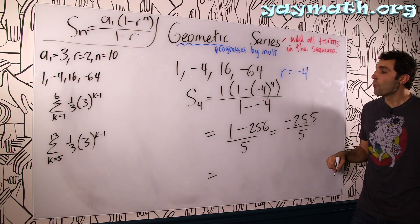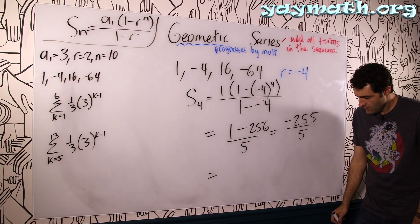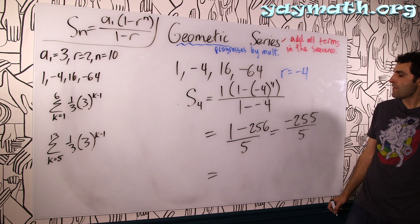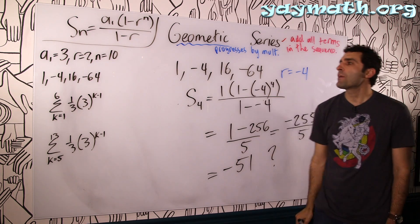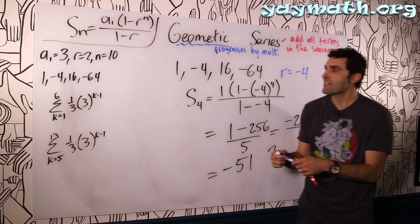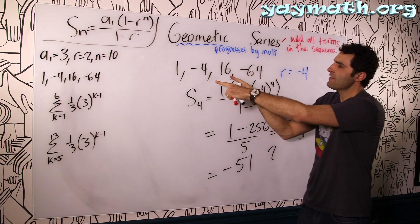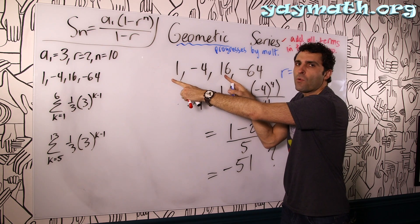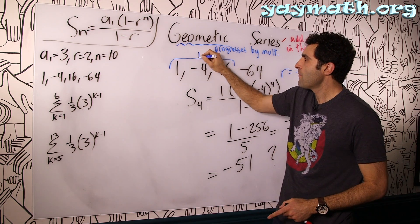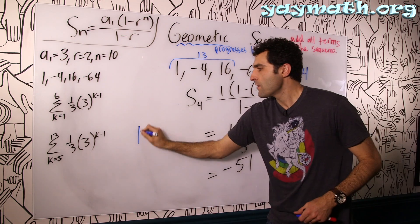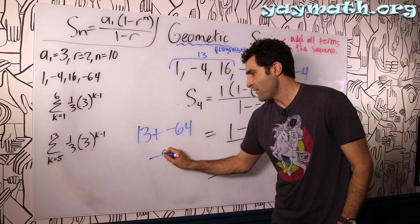5 into 200 is 40. 5 into 55 is 11. So 40 plus 11 is 51, negative 51. Let's see if I did it right — add them up. 1 plus negative 4 plus 16 plus negative 64: that's 12 plus 1 is 13 up here, and 13 plus negative 64 is negative 51. Score — it worked both ways. Something very satisfying about that.